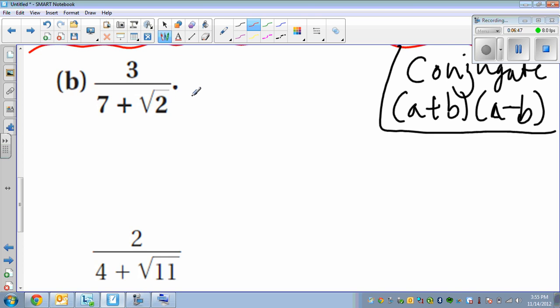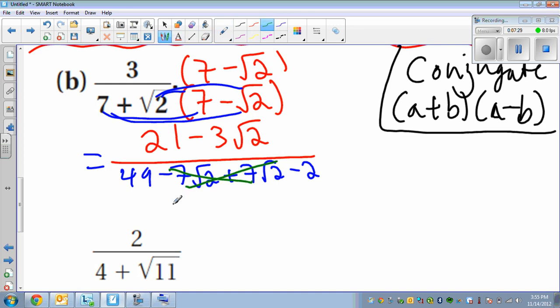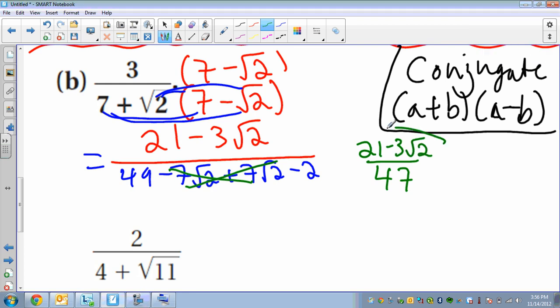This says 7 plus square root of 2. So we're going to multiply by 7 minus the square root of 2. And whatever we do to the bottom, we have to do to the top. So the top just distributes, and the bottom we have to foil. First, outer, inner, last. We can simplify that. It's really cool—these middle ones just go away, and then we just have 49 minus 2 on the bottom. So our final answer will look like this.